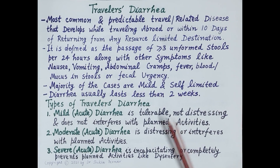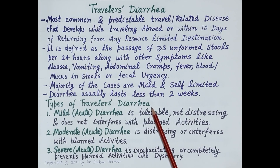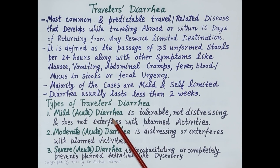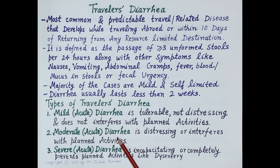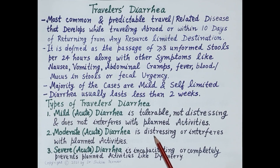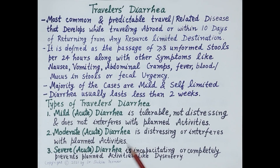There are different types of travelers' diarrhea: mild, moderate, or severe. Mild acute travelers' diarrhea is tolerable, is not distressing, and does not interfere with planned activities. Moderate acute travelers' diarrhea is distressing — it disturbs the patient, can cause anxiety, and can also interfere with planned activities.